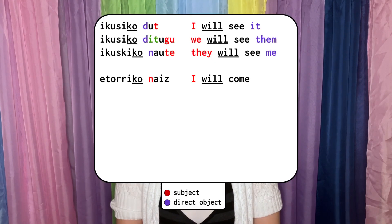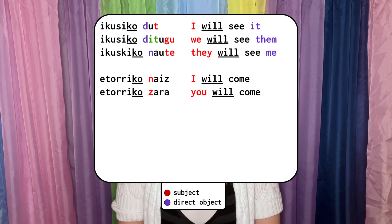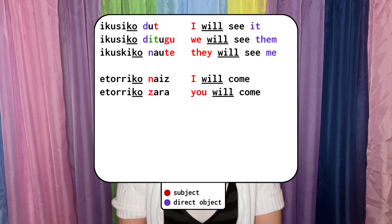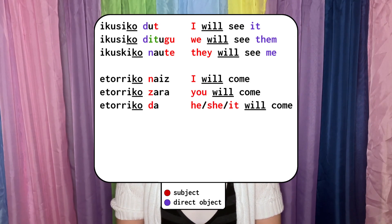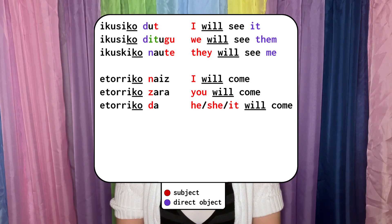If you use an intransitive verb, you use the intransitive form of isan. E toa riko nais — I will come. E toa riko sara — You will come. E toa riko da — He will come.